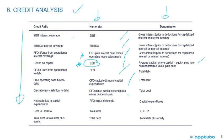Discretionary cash flow to debt is CFO minus capex minus dividends paid, divided by total debt — dividends are discretionary and don't have to be paid. Net cash flow to capital expenditures is funds from operations minus dividends divided by capital expenditures. Debt to EBITDA is total debt to EBITDA. And debt to capital is total debt divided by debt plus equity.